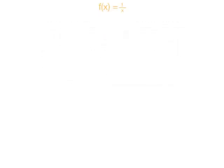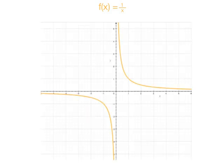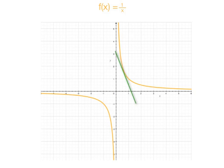Here's another equation, f of x is equal to 1 over x. And this is what the curve looks like. Like before, there's a tangent line that exists everywhere.